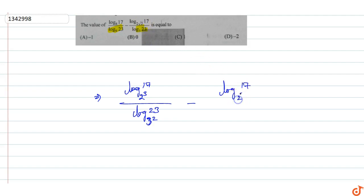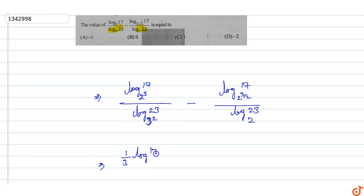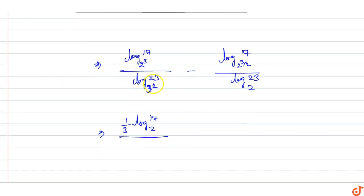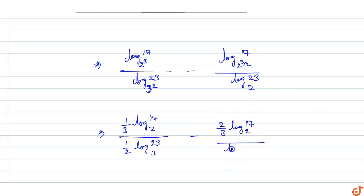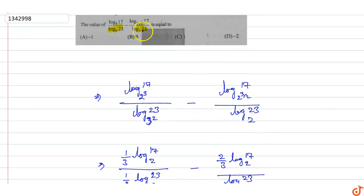Since root 2 is 2 raised to the power 3 by 2, upon log 23 base 2, this becomes log 17 base 2 raised to power 3, giving 3 by 3 log 17 base 2 upon log 23 base 3. Then base 3 squared gives power 1 by 2, so 1 by 2 log 23 base 3, minus 3 by 2 times 2 by 3 log 17 base 2, upon log 23 base 3.